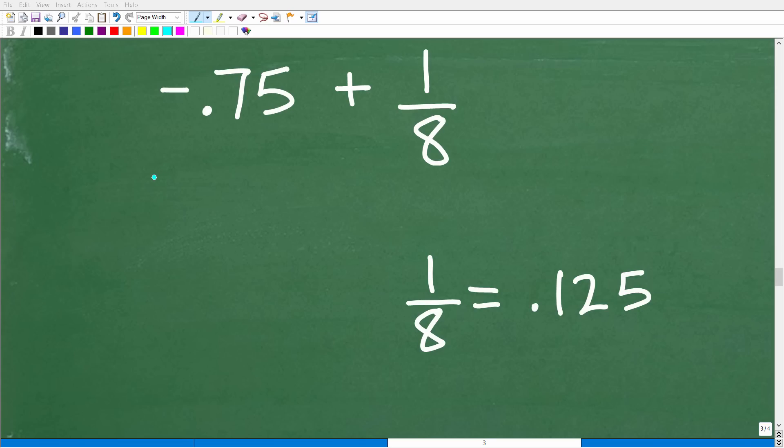Okay. So the other way to do this problem is to work in all decimals. So that means we have to change this fraction one-eighth into a decimal. So one-eighth is equivalent to the decimal point one-two-five.